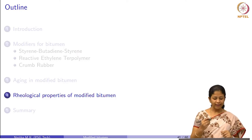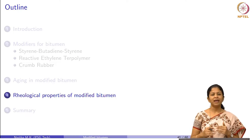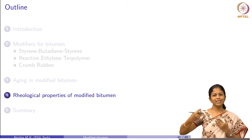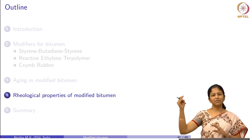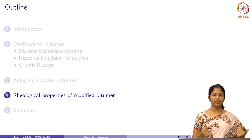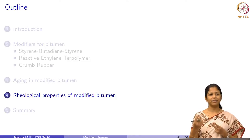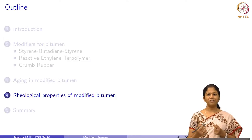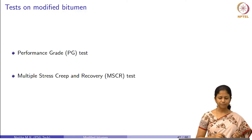Next we are going to focus on the rheological properties of modified bitumen. When we add a modifier to bitumen, it generally results in two implications on the base bitumen. The first one is increase in stiffness — either at high temperatures only, or increase in stiffness at high temperatures and reduction in stiffness at low temperatures, depending upon the type of modifier. The second most important and desired property is elastic recovery. The addition of modifiers is said to improve the elastic recovery of base bitumen. So we need to quantify these two effects of polymer modified bitumen.